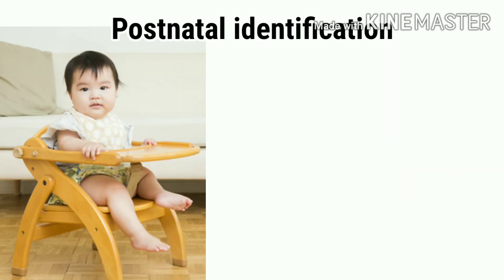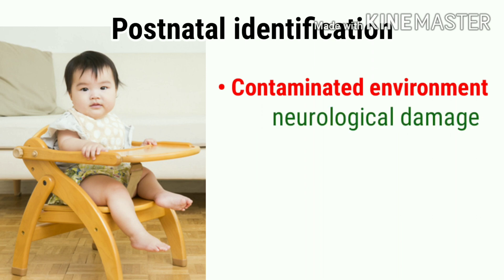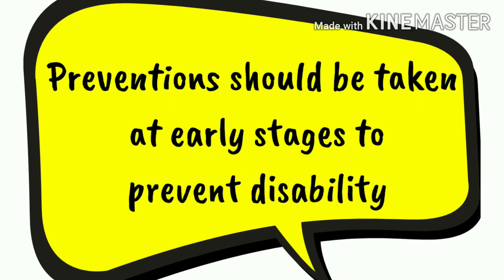Postnatal identification: exposure of a child to contaminated environments such as lead can lead to neurological damage. A severe accident that leads to head injury can also impair cognition. Measures should be taken at early stages to prevent disability.